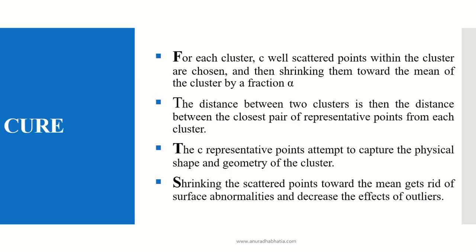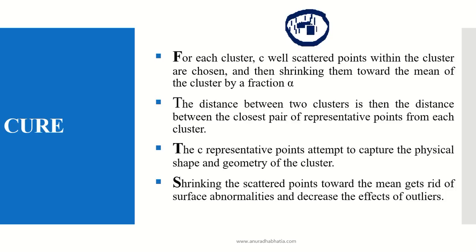For each cluster, C well-defined scattered points within the cluster are chosen and then shrunk towards the mean of the cluster by the fraction alpha. We find the Euclidean distance and then shrink them together. The distance between two clusters is the distance between the closest pair of representative points from each cluster. For example, if I have two clusters each with a centroid, and these two points are the minimum distance points, then they are formed together — two clusters joined into a single cluster with a new representative point.